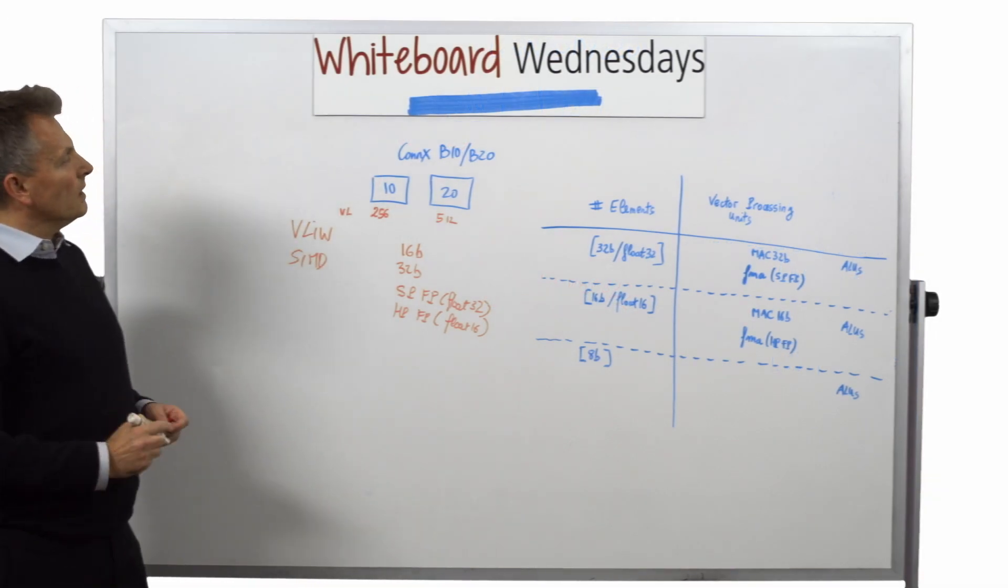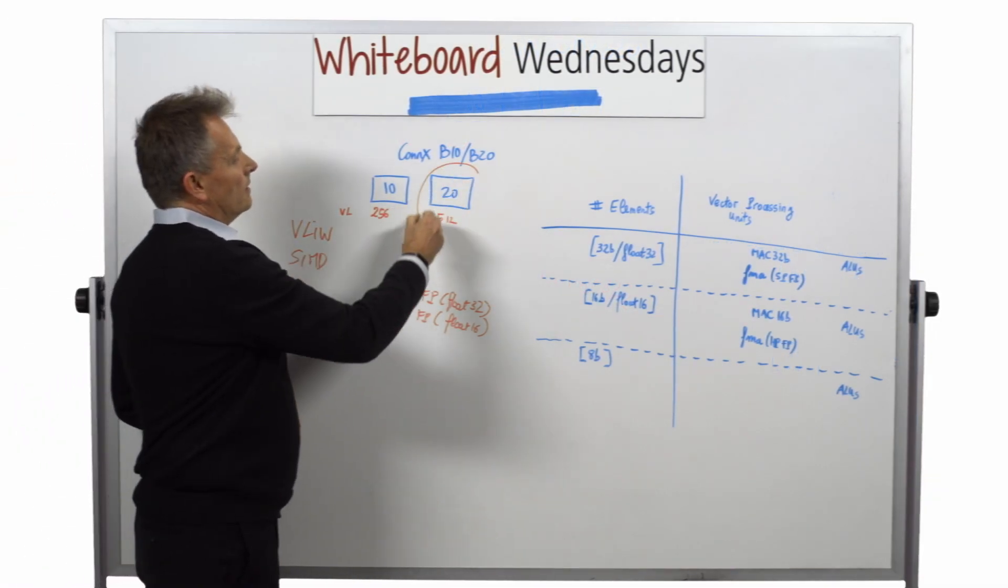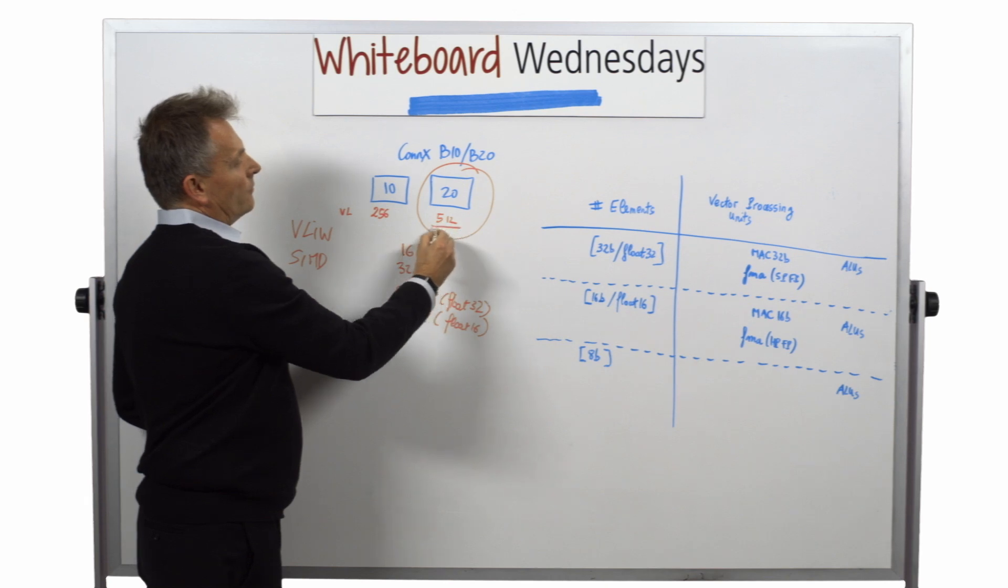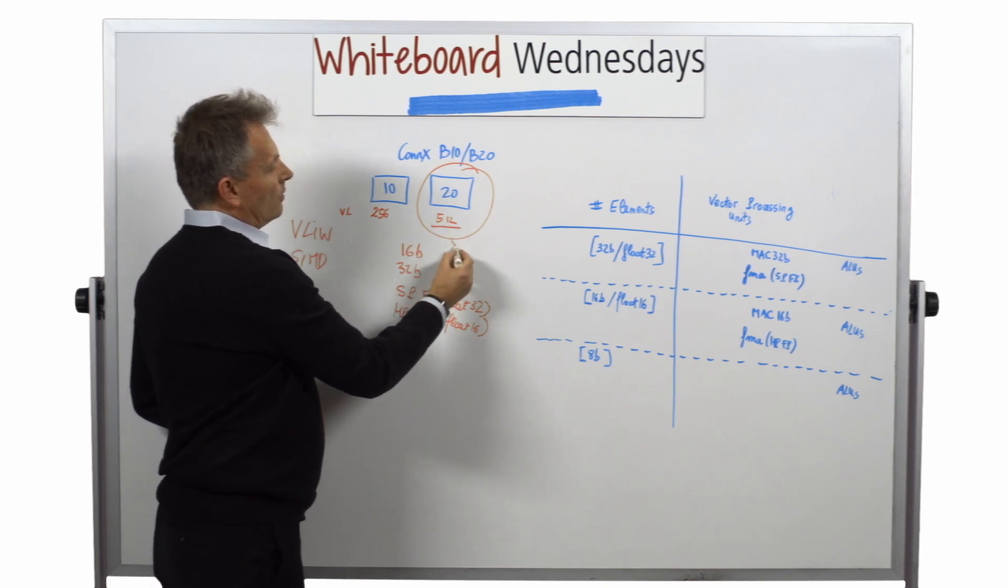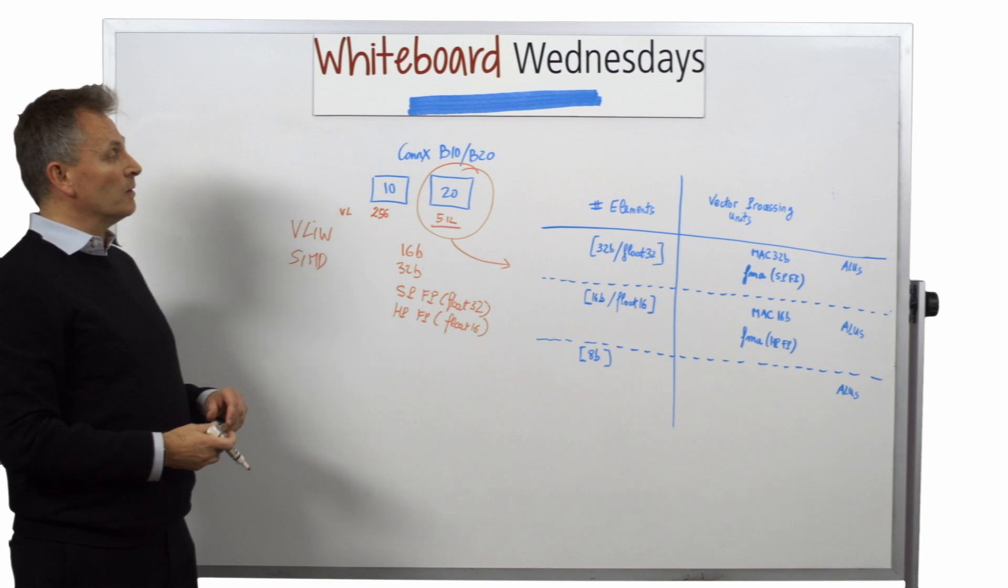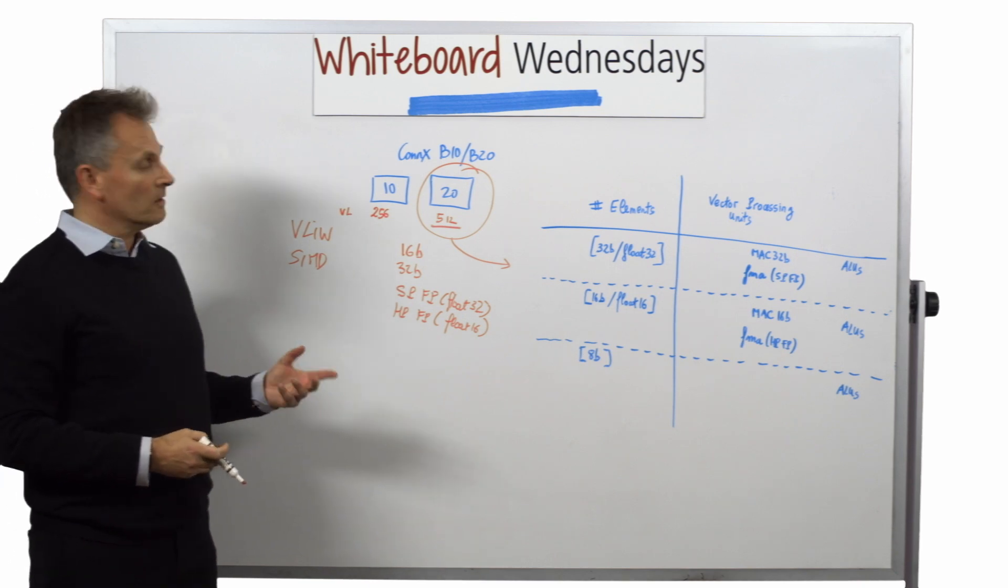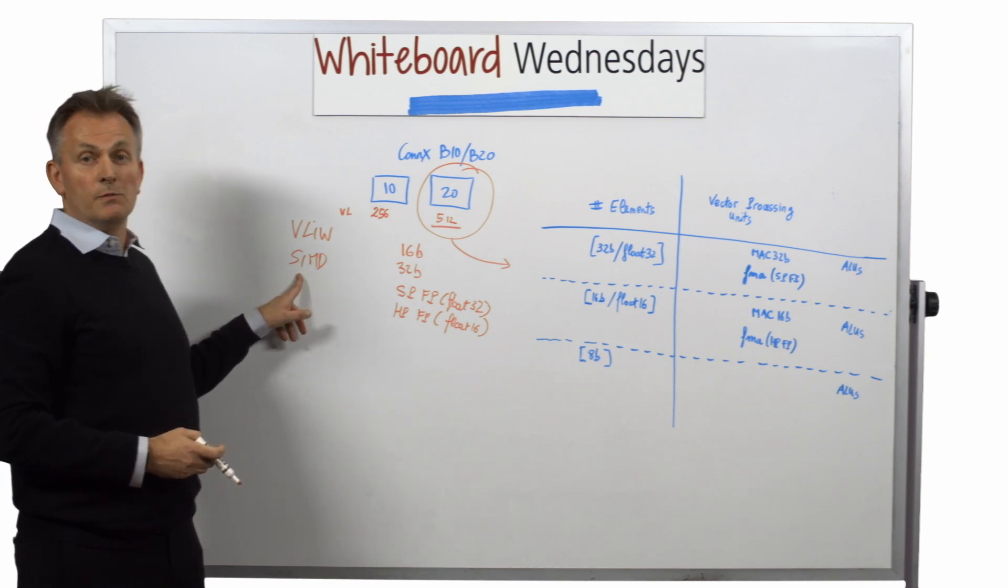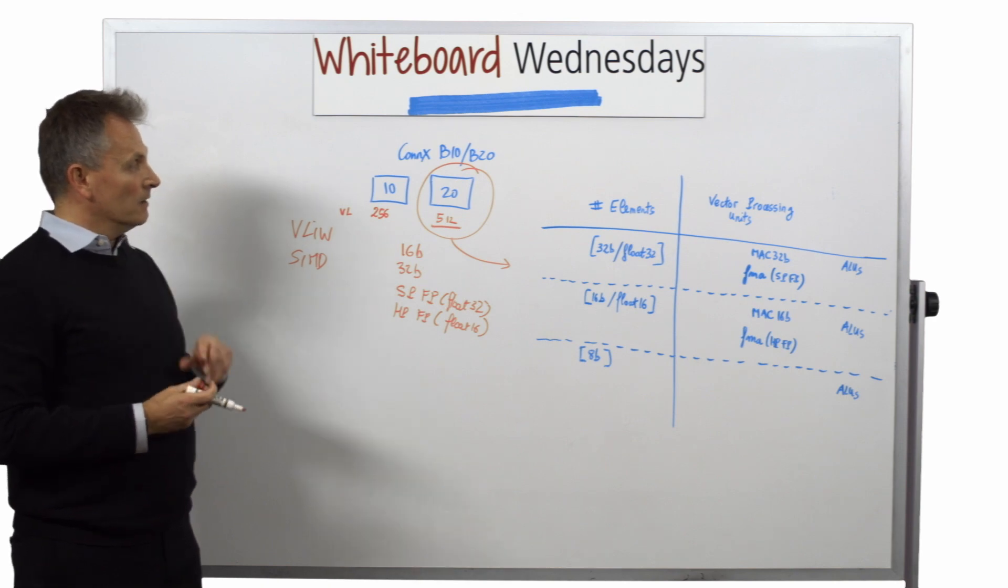Now looking into the B20 in particular with this 512 vector length, how does it translate in the number of elements that needs to be processed once a SIMD instruction is being executed by the DSP?